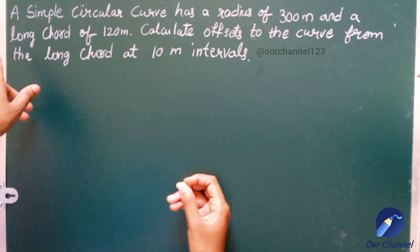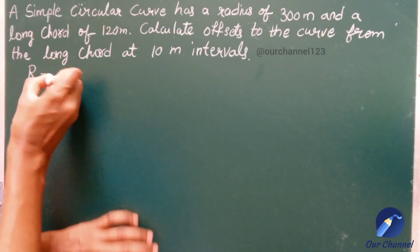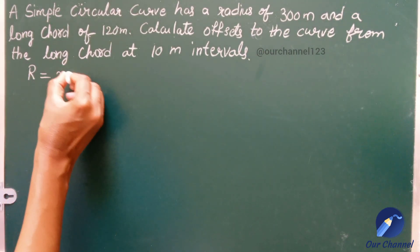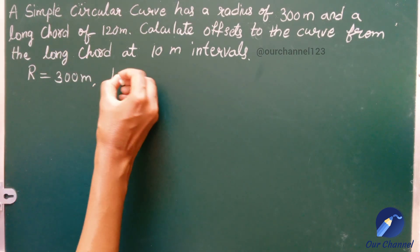Hello everyone, welcome back to our channel. Today we are going to solve a problem based on offsets from long chord. They have given radius and long chord and we should find the offsets of the curve. The given data: R is equal to 300 meters, length of the long chord is 120 meters, interval is 10 meters.